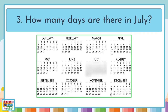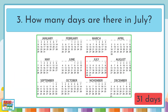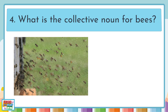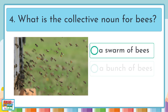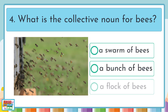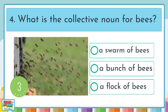Question 3. How many days are there in July? 31. Question 4. What is the collective noun for bees? A swarm of bees, a bunch of bees, or a flock of bees? A swarm of bees.